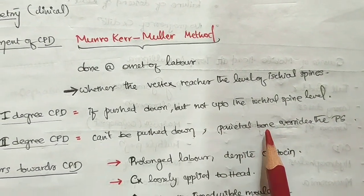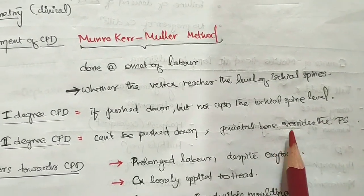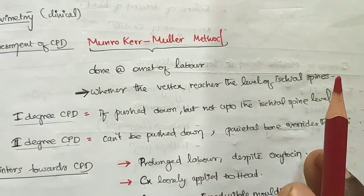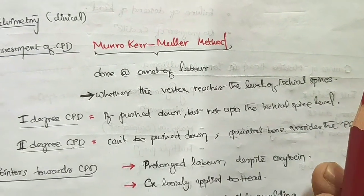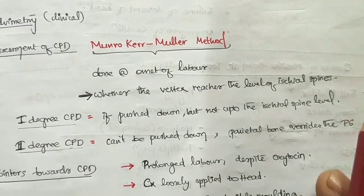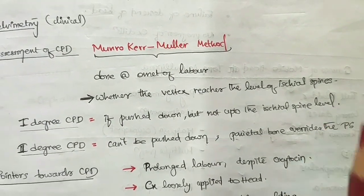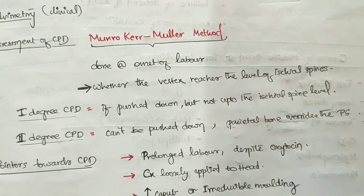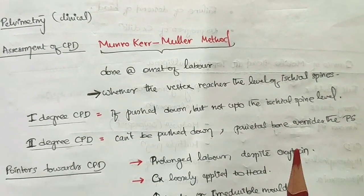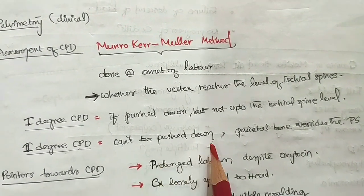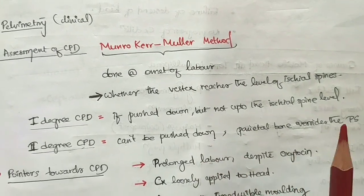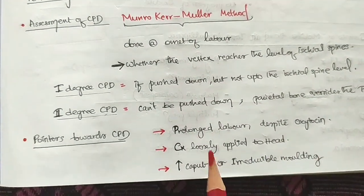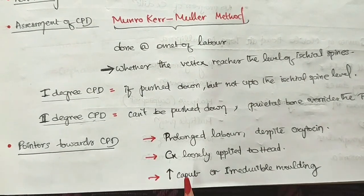In second degree CPD, the parietal bone of the baby's head overrides the pubic symphysis. This indicates a significant degree of cephalopelvic disproportion.